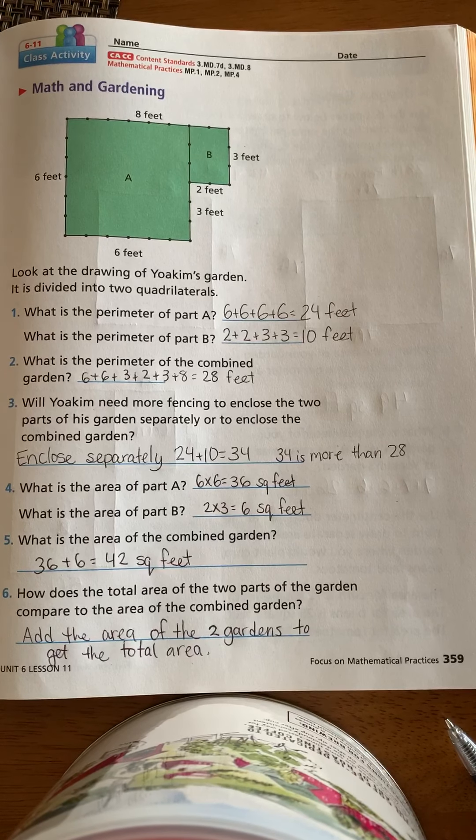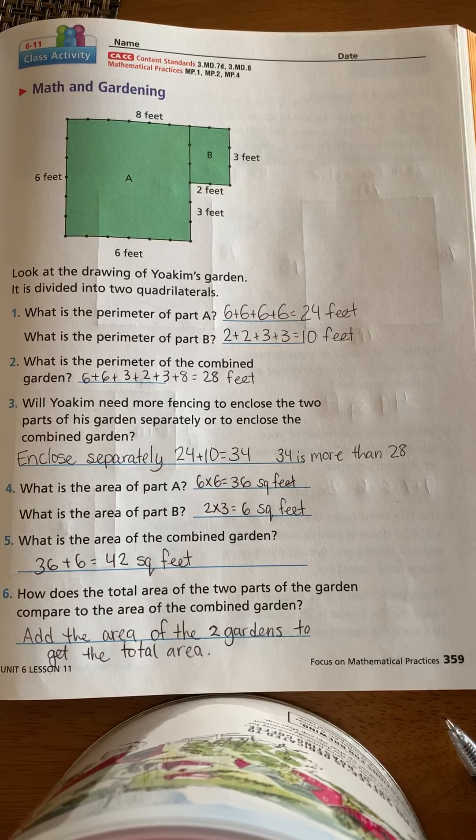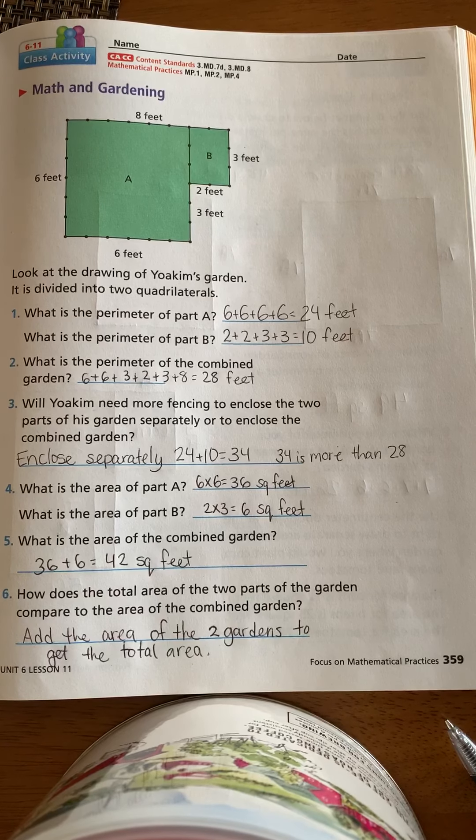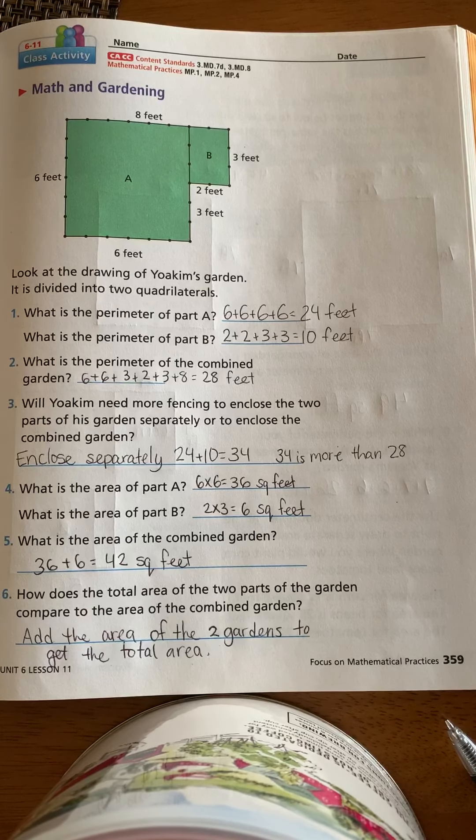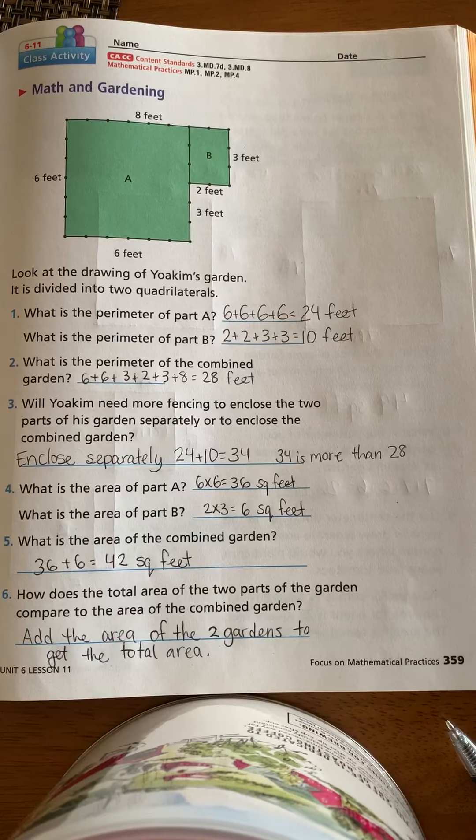Number six, how does the total area of the two parts of the garden compare to the area of the combined garden? Well, you add the area of the two gardens to get the total area of the combined garden.